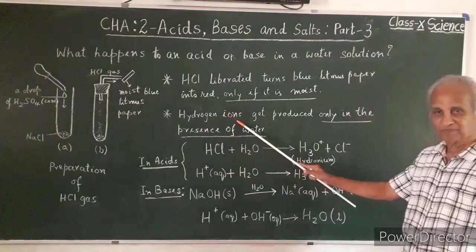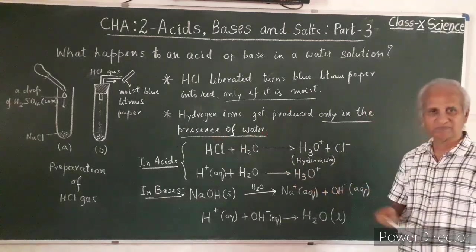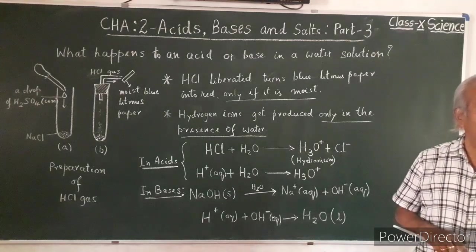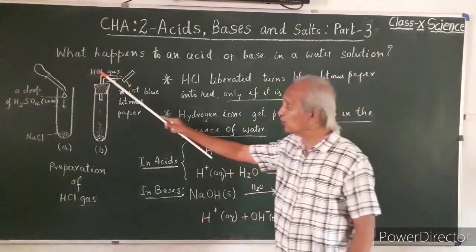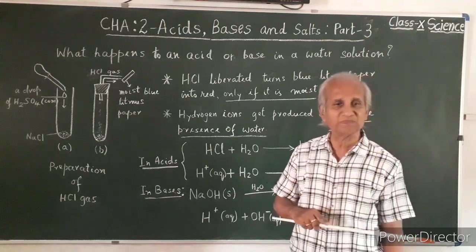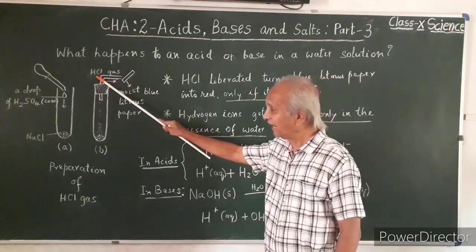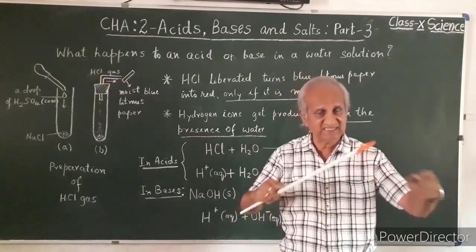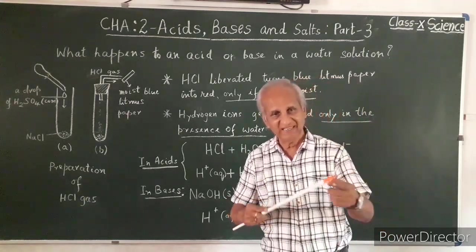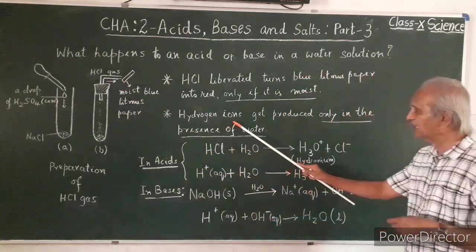Hydrogen ions get produced only in the presence of water. Water is very much required. Otherwise you won't have acid there, you will have only hydrogen chloride gas. The moment you brought a moist paper there, hydrogen chloride gas which was in gaseous state turned into liquid state. It became acid in liquid state and that acted.